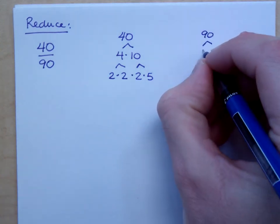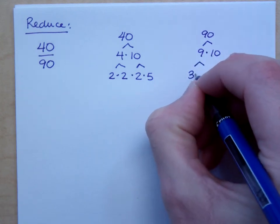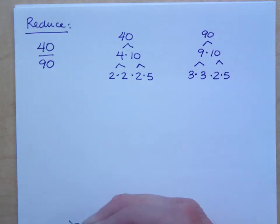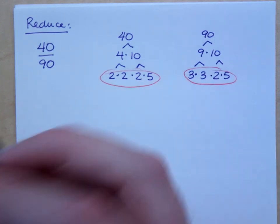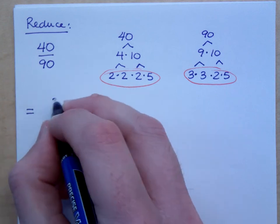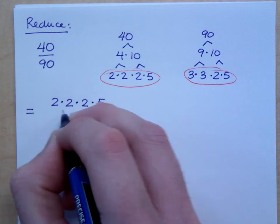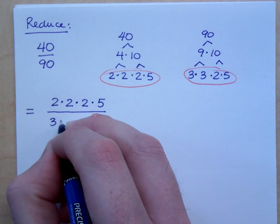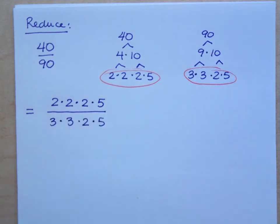And similarly, 90 breaks down as 9 times 10. 9 breaks down as 3 times 3, and the 10 breaks down as 2 times 5. So I want to take these prime factorizations that I see right here, and I'm going to rewrite my fraction. 40, I'm going to rewrite with 3 factors of 2 and a factor of 5. I'm going to rewrite 90 as 3 times 3 times 2 times 5.